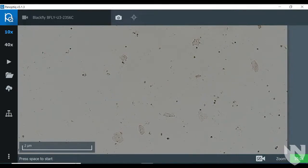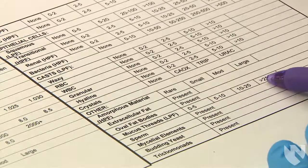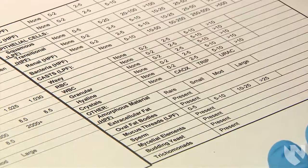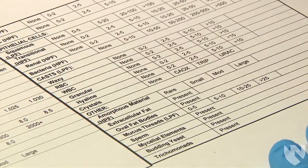Once you have scanned the correct number of fields, take the average number of elements you saw per low power field and document your findings per your laboratory's procedure. We will use the ranges our worksheet gives us.